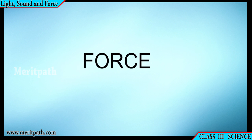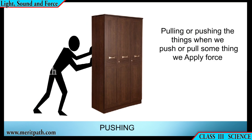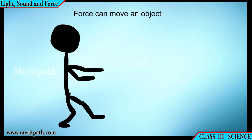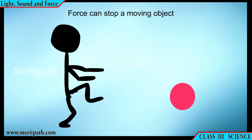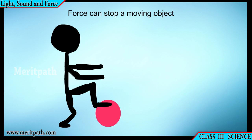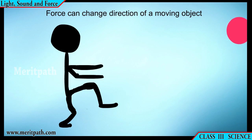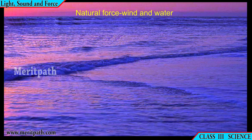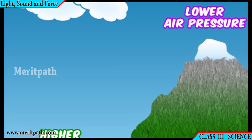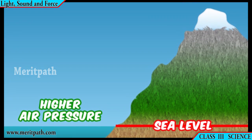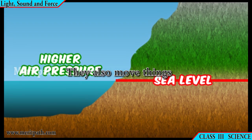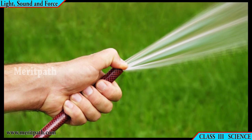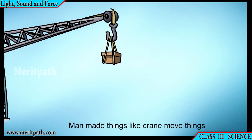Force: when we push or pull a thing, we apply force. Force can move an object, it can stop a moving object, and it can also change the direction of a moving object. Natural forces are wind and water — they also move things because both have pressure. Force is nothing but the pressure applied. Man-made things like cranes also move things.